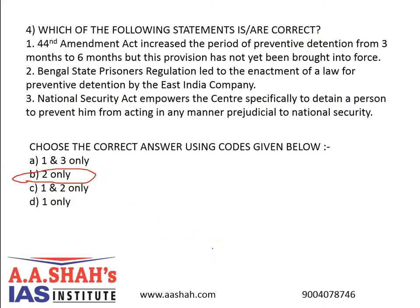The first statement is incorrect because the 44th Amendment Act of 1978 reduced the period of detention without obtaining the opinion of an advisory board from 3 to 2 months. However, this provision has not yet been brought into force, hence the original period of 3 months still continues. Preventive detention laws in India date back to the colonial era when the Bengal Regulation Part 3 of 1818 was enacted to empower the government to arrest anyone for defence or maintenance of public order without giving the person recourse to judicial proceedings. A century later, the British government enacted the Rowlatt Act of 1919 that allowed confinement of a suspect without trial.